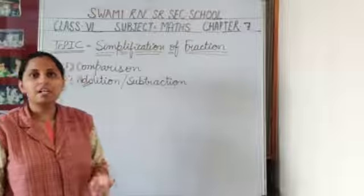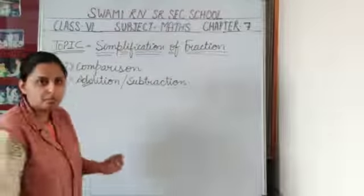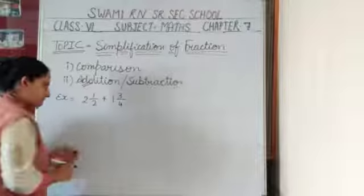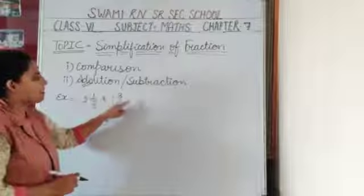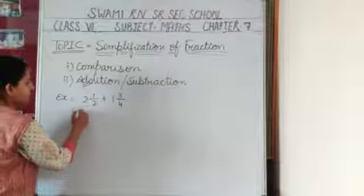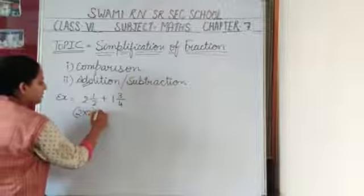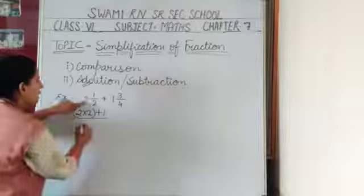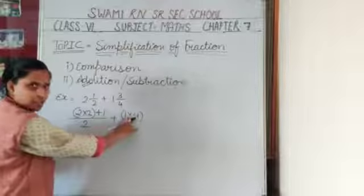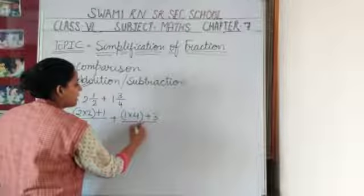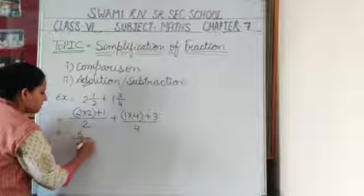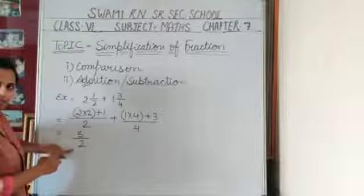Now we take another example with mixed fractions — how to perform addition between mixed fractions. The example is 2 and 1 upon 2, plus 1 and 3 upon 4. First we convert the mixed fractions into improper fractions. For the first: multiply 2 by 2 then add the remainder 1, giving 5 upon 2. For the second: multiply 1 by 4 then add 3, giving 7 upon 4.